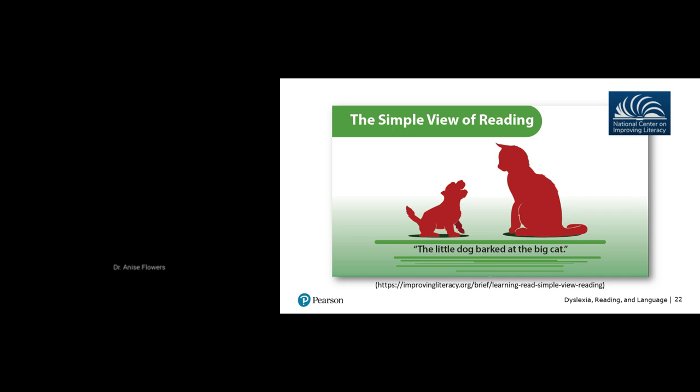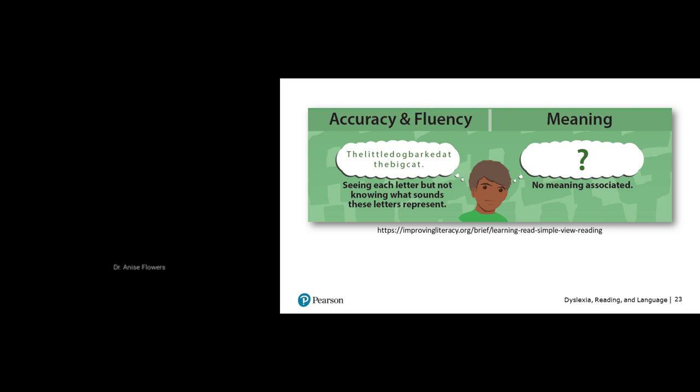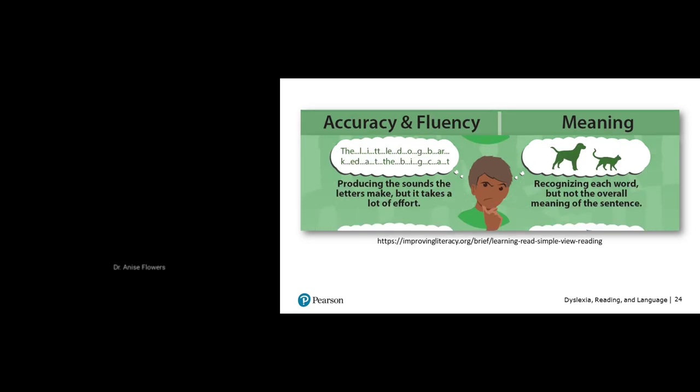To understand text, we also need background knowledge — knowing what dogs and cats are, that a dog barks, and that 'little' and 'big' are size concepts. If a child just saw the letters but didn't know what sounds they represent, they wouldn't gather any meaning. Or if they can produce the sounds but very slowly and effortfully, they might recognize words but the reading speed is so slow they can't grasp the overall meaning of the sentence.